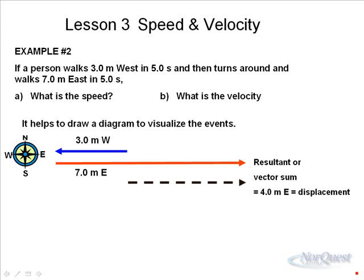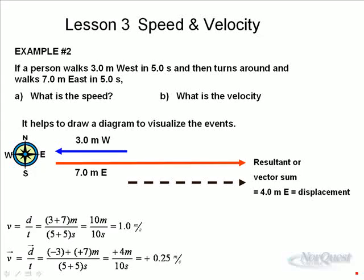The vector sum of these two vectors three meters west and seven meters east is only four meters east. So when we calculate the speed and velocity, we have to keep in mind that the distance, which is ten meters, is different than the displacement, which is only four meters east. So as you can see, this first calculation is a distance over time, three plus seven again, over five plus five again, ten over ten equals one point zero meters per second. On the bottom, we've got three plus seven, but the three is to the west, the seven is to the east, and so one of them has to be made negative.